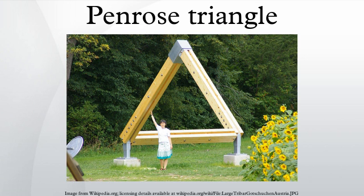M.C. Escher's lithograph Waterfall depicts a water course that flows in a zigzag along the long sides of two elongated Penrose Triangles, so that it ends up two stories higher than it began. The resulting waterfall, forming the short sides of both triangles, drives a water wheel. Escher helpfully points out that in order to keep the wheel turning, some water must occasionally be added to compensate for evaporation.